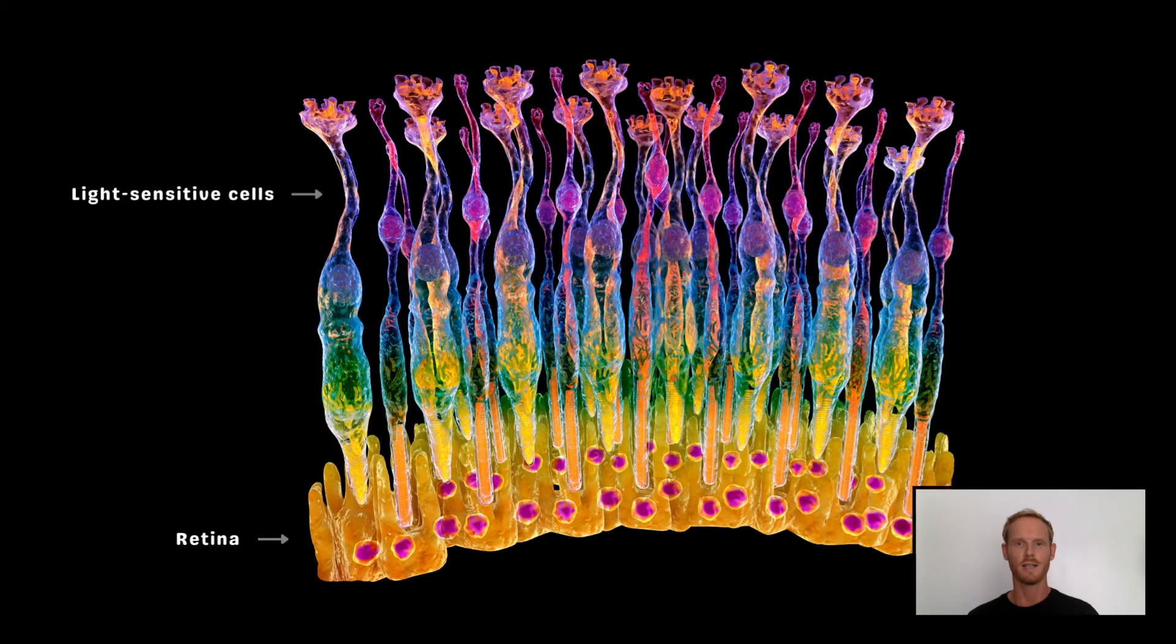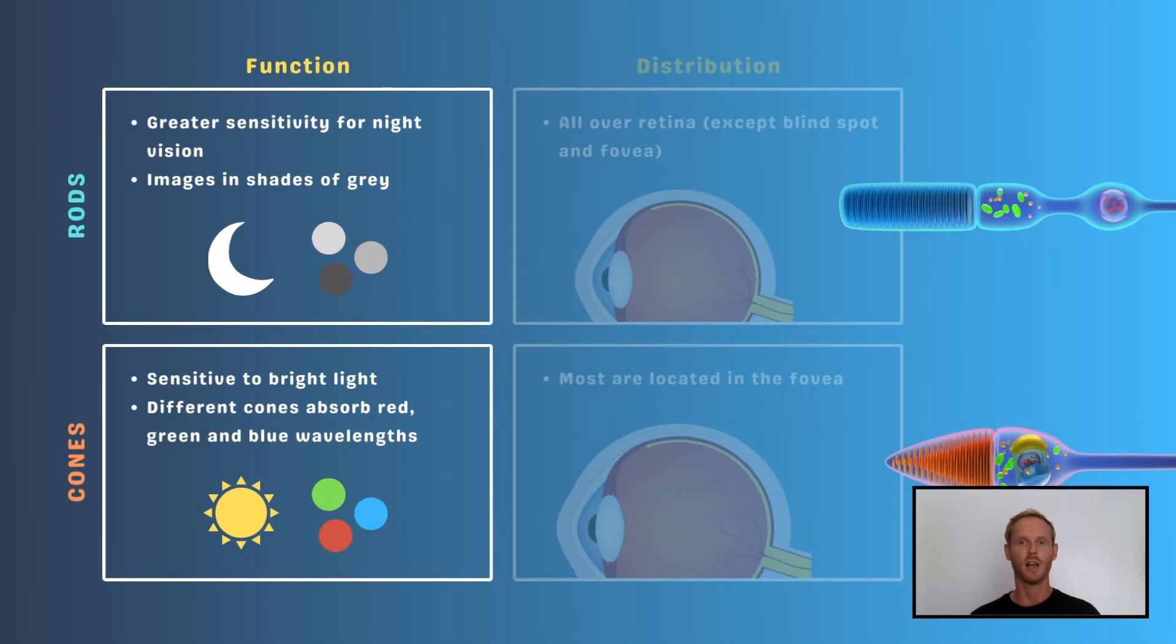There are two types of light-sensitive cells in the retina: rods and cones. The cones enable us to distinguish colours in bright light, while the rods are sensitive to low intensities of light and play an important role in night vision. The images we form at night appear in shades of grey, as the intensity of the light is insufficient to stimulate the cone cells.